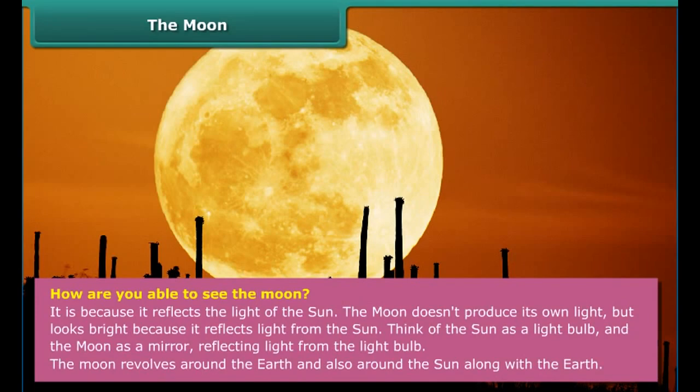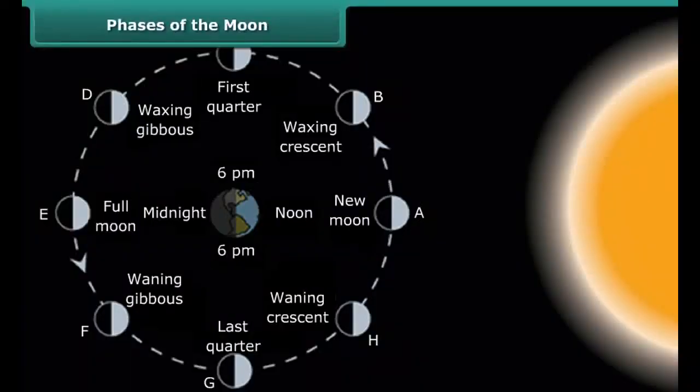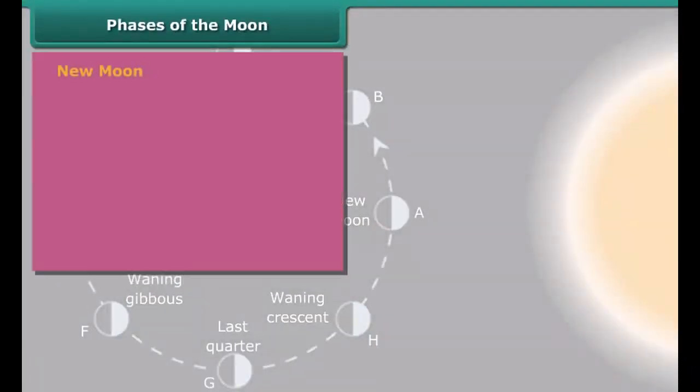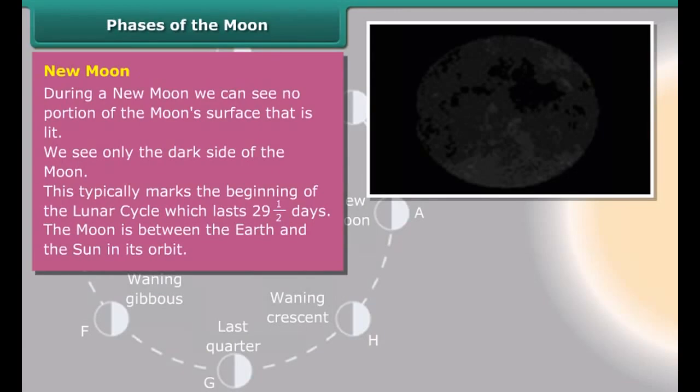The Moon appears to be the brightest of all other celestial objects after the Sun. You can see the whole of the Moon on a full Moon day. The Moon does not produce its own light, but looks bright because it reflects the light from the Sun. Think of the Sun as a light bulb and the Moon as a mirror reflecting light from the light bulb.